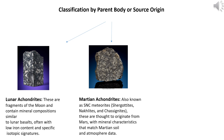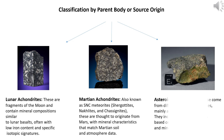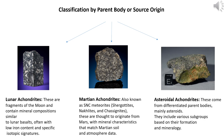Asteroidal achondrites: these come from differentiated parent bodies, mainly asteroids. They include various subgroups based on their formation and mineralogy.